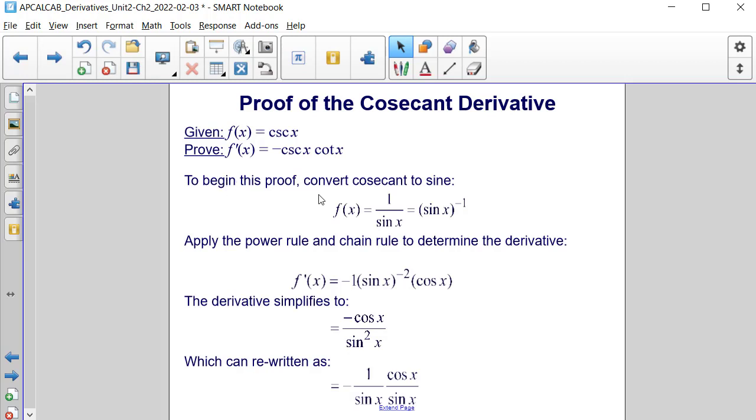To begin this proof, convert cosecant into sine. f of x is equal to 1 divided by sine of x, which is equal to sine of x raised to the negative first power.